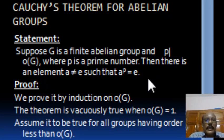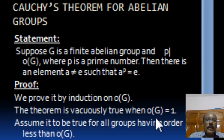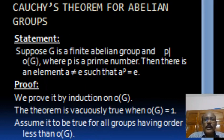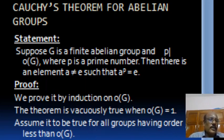We prove this result using induction on order of G. Starting with order of G equal to 1: if P is a prime number dividing order of G, there is no such prime since order of G is 1, so the theorem is vacuously true when order of G equals 1. As an induction hypothesis, we assume the result is true for all groups having order less than order of G. That means if H is any abelian group with order less than order of G, and P divides order of H, then within H you can find an element A such that A power P equals E.